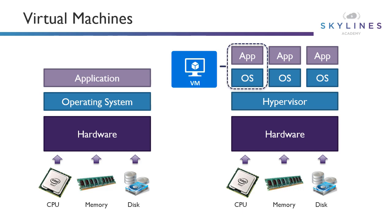VMs allowed us to oversubscribe hosts, because often enterprises weren't using all the CPU and memory. Every time a new application was stood up, they'd buy a whole set of new hardware, but a lot went to waste. By putting many OSs and apps on the same CPU, memory, and disk, you get much better consolidation and return on your investment.